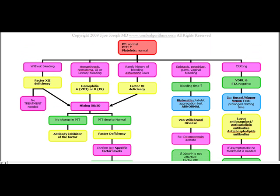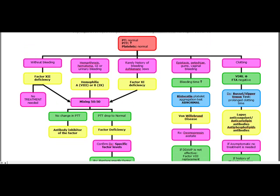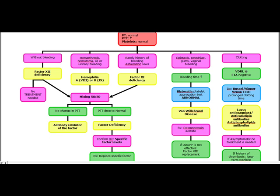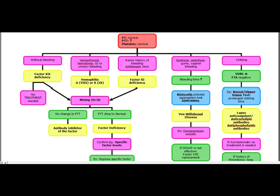To summarize the coagulopathies with an elevated PTT cluster: we covered hemophilia A and B, factor 11 deficiency, factor 12 deficiency, von Willebrand's disease, and lupus anticoagulants.